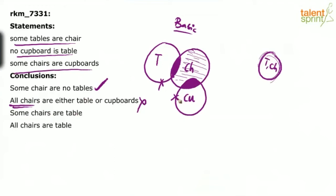Third one: some chairs are table. If some tables are chair, obviously some chairs are table. You need not even look at the diagram. You know that for some A's are B's, the definite conclusion is some B's are A's. So if some tables are chair, then some chairs are table is definitely true. The last one — all chairs are table — is not possible in this case. All chairs are table is wrong because only some chairs are table, so this conclusion fails in the basic diagram itself.